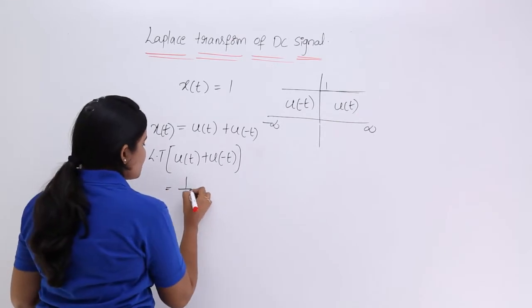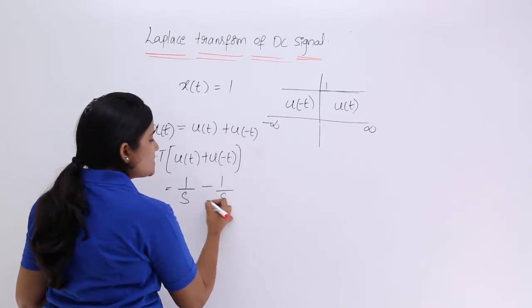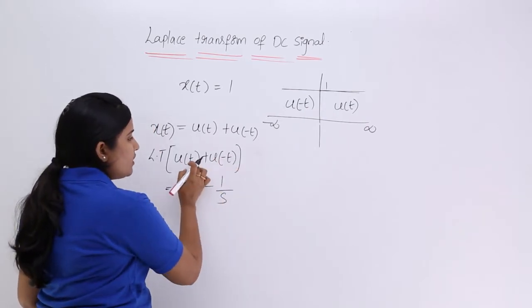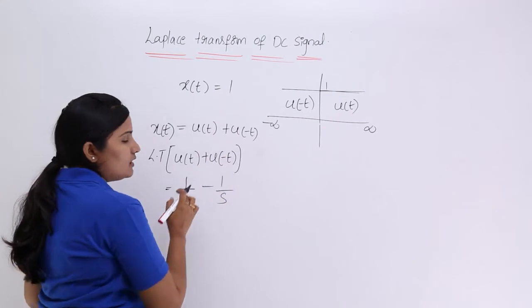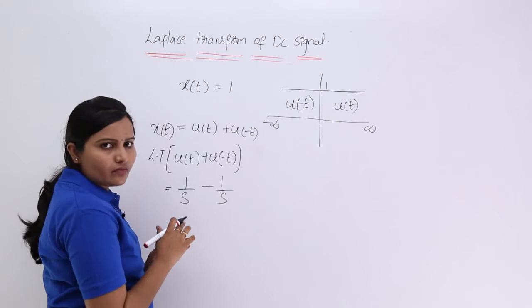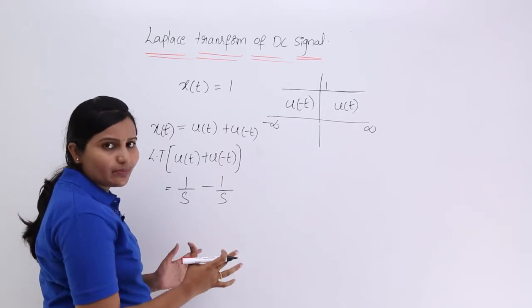Laplace transform of u of T is 1 by S and Laplace transform of u of minus T is minus 1 by S. So just you need to take minus. When you are having change in minus from here to here then in transform we can put minus. In Laplace transform we are having that simplicity.